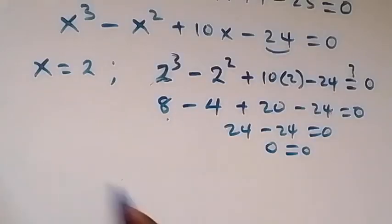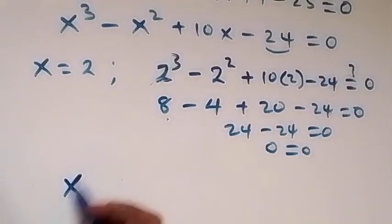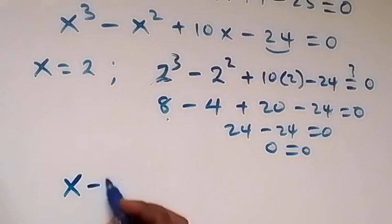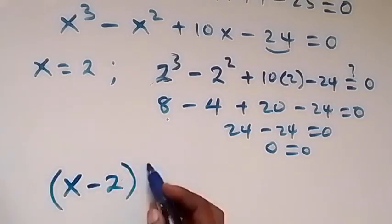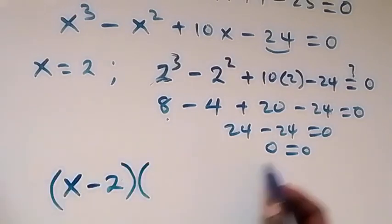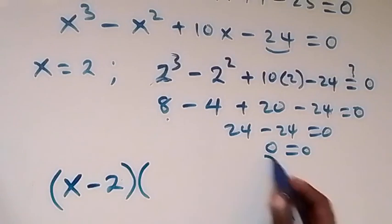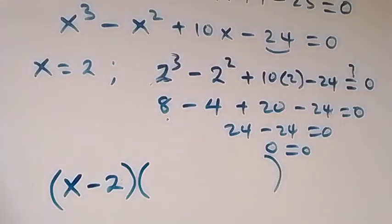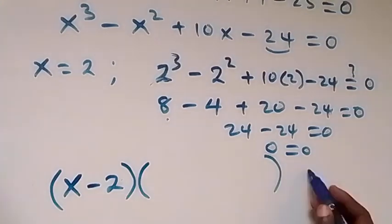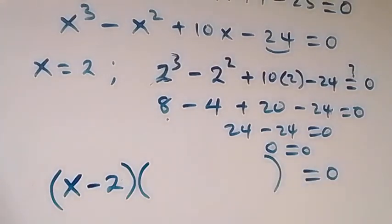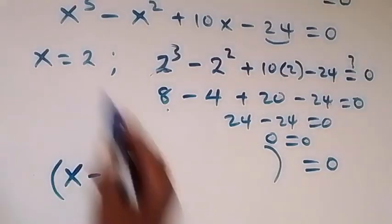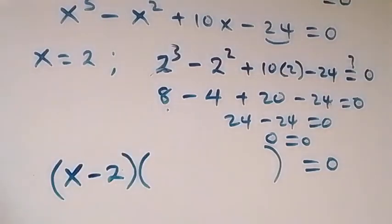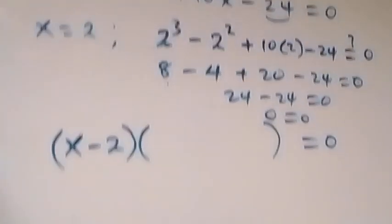Which also means that x minus 2 is a factor of the polynomial. Now to get the other factor, which will be a quadratic factor, let's divide this polynomial by 2 using synthetic division.